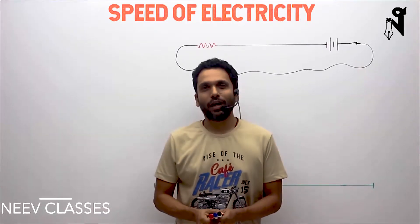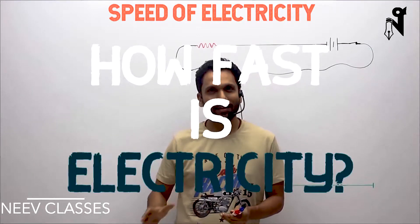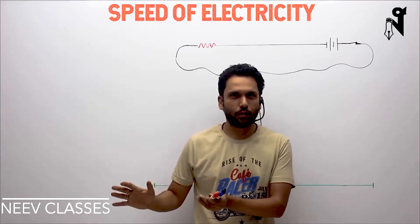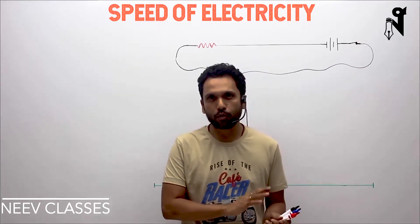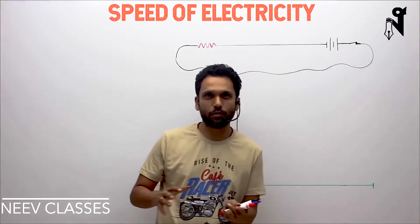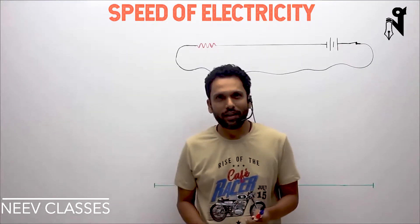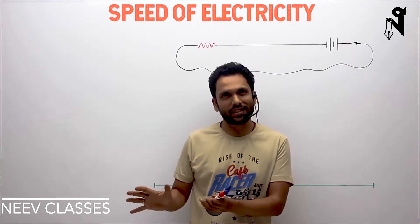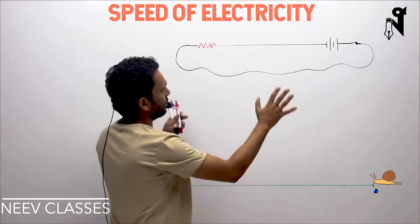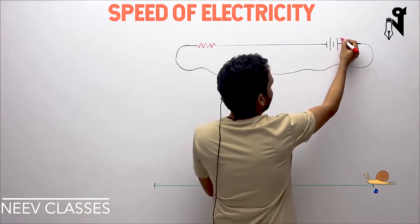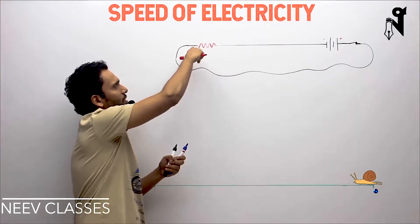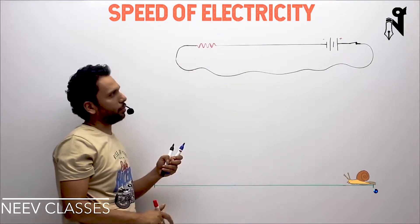Before rubbing off the board, I was just discussing how fast is electricity, whatever that may mean. We were discussing that if you have an electrical device like a bulb far far away from the source or the switch, as soon as you switch it on, you see that the bulb glows. It seems like the electricity has reached instantaneously. I have drawn a DC circuit with the positive terminal on this side and the negative terminal on this side, and this red piece of zigzag wire is the bulb.